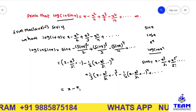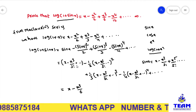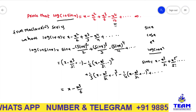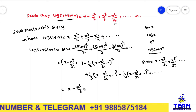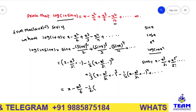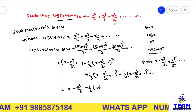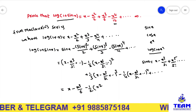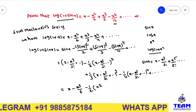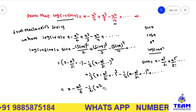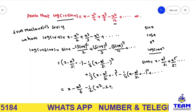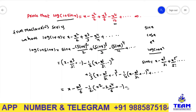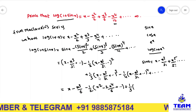This gives x minus x cubed by 6 plus so on. We only need terms up to x to the power of 4, so higher powers like x to the 5, 6, 7 are not required. For the minus 1 by 2 term, using the (a minus b) whole squared formula: a squared gives x squared, and minus 2ab gives minus 2 times x times x cubed by 3 factorial, which is minus x to the power of 4 by 6, plus so on.